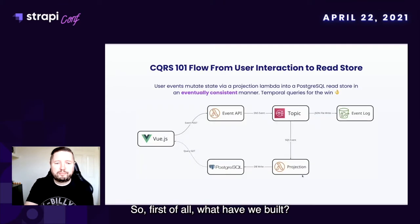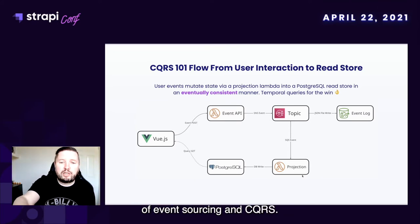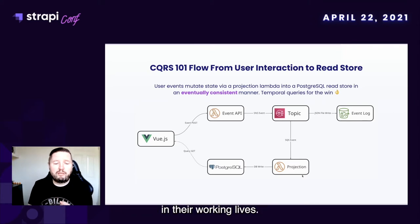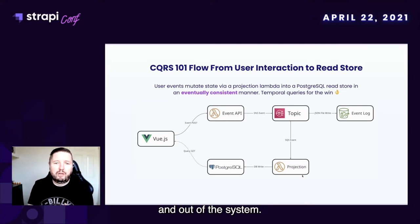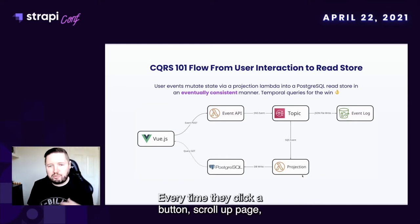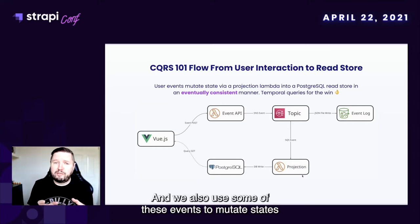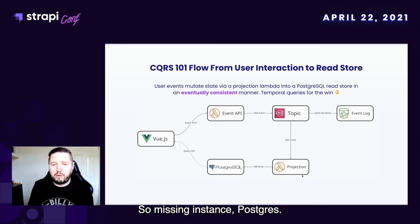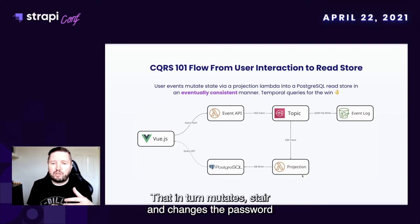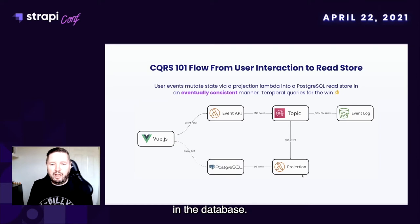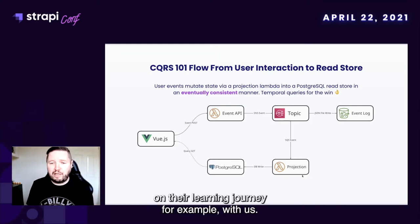So what have we built? The core of our platform makes use of event sourcing and CQRS. It's probably worth touching on that because not everybody's come across it. This gives us a separation of data flows in and out of the system. Every time a user interacts with a UI, it generates an event into our event API. Every time they click a button or scroll a page, this is written to an event log — a ledger of every action that's ever occurred. We also use some of these events to mutate state into a user-facing database, in this instance Postgres. An example: a user updates their password, which mutates state and changes the password in the database. A more interesting example would be someone clicking a button at the end of a page, which mutates state to say the user has finished an exercise and progressed on their learning journey.